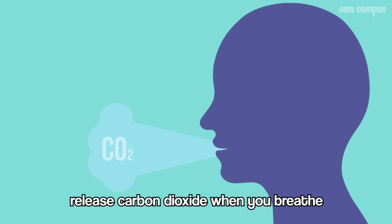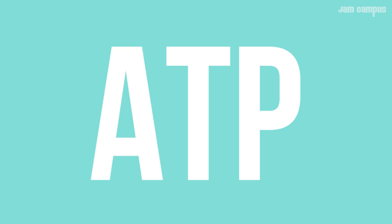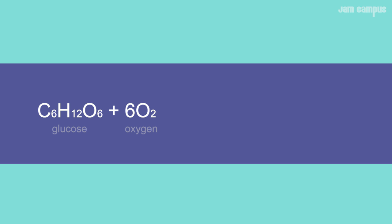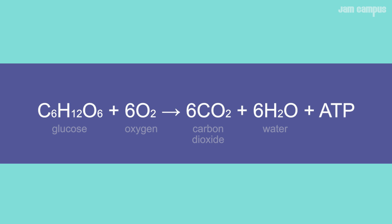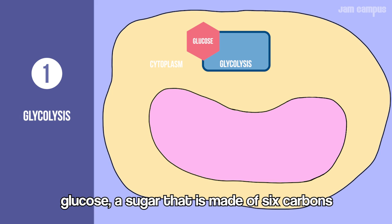In your body, cells turn food to energy — glucose from the food you eat, oxygen you breathe in, ATP energy. Releases carbon dioxide when you breathe, creates water when complete. The products total with ATP energy: C6H12O6 plus 6 O2 forms into 6 CO2 plus 6 H2O plus energy as ATP.